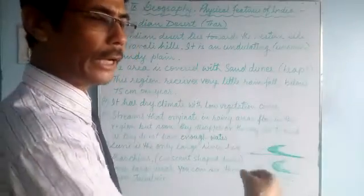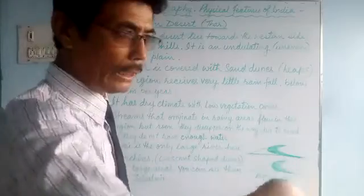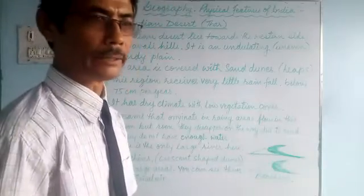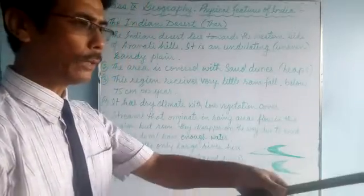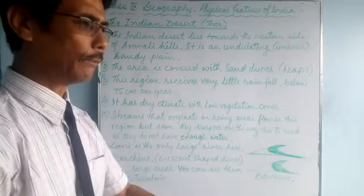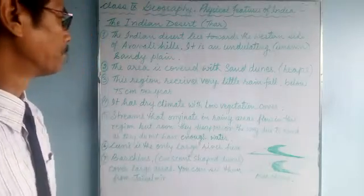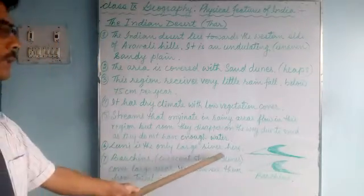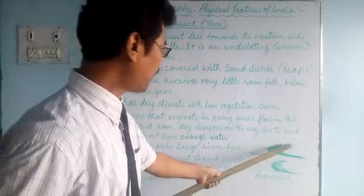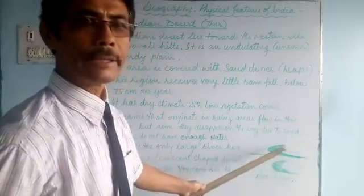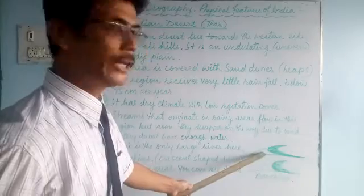The Luni river flows into Sambhar Lake — it does not enter the sea. The Luni river receives water from the rainy areas on the western side, and while flowing it enters Sambhar Lake. The Luni is the only large river in this desert region.